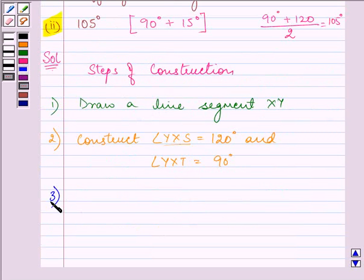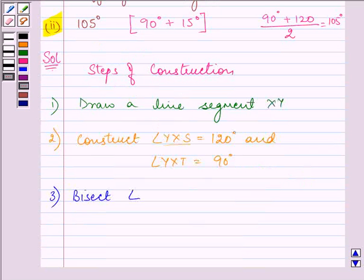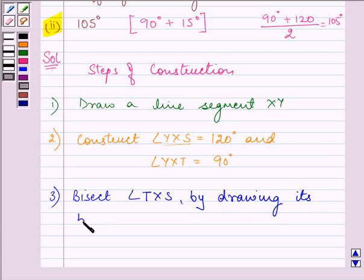The third step was to bisect angle TXS by drawing its bisector XN.